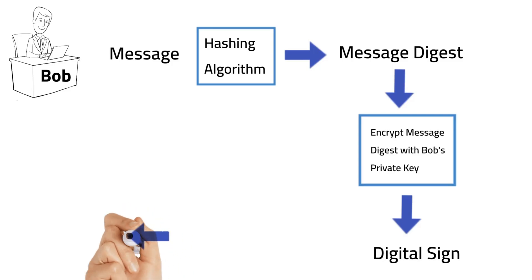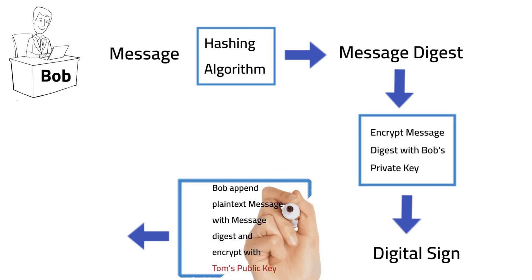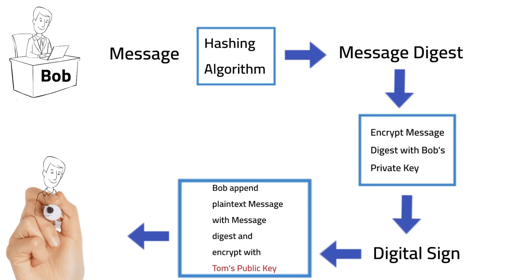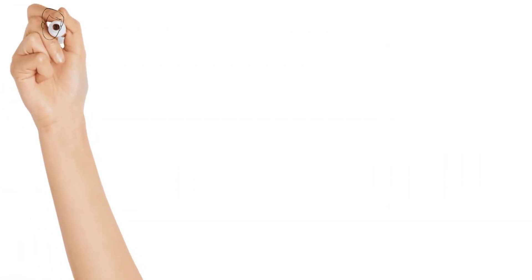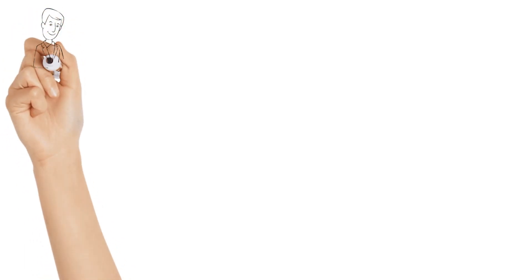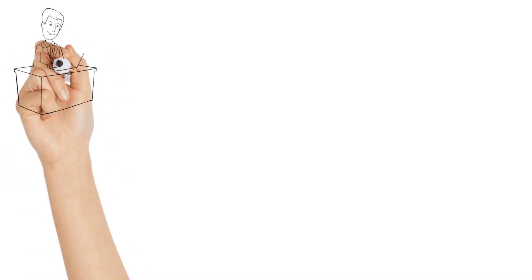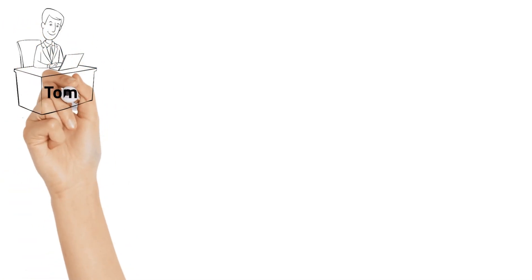With this digital signature, he appends the plain text message, encrypts it with Tom's public key, and sends it to Tom. Tom then reverses the process — first, using his own private key, he decrypts the message he received from Bob.